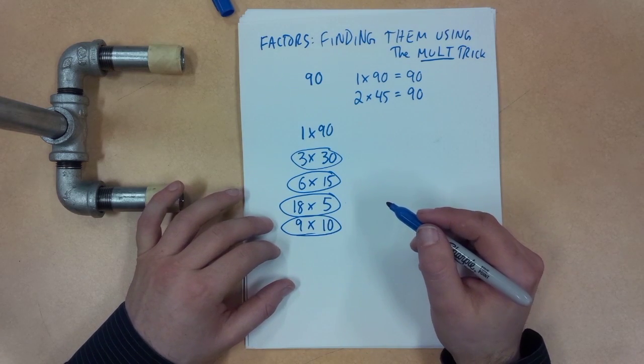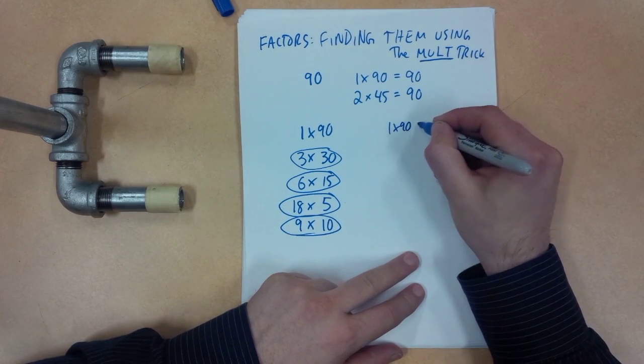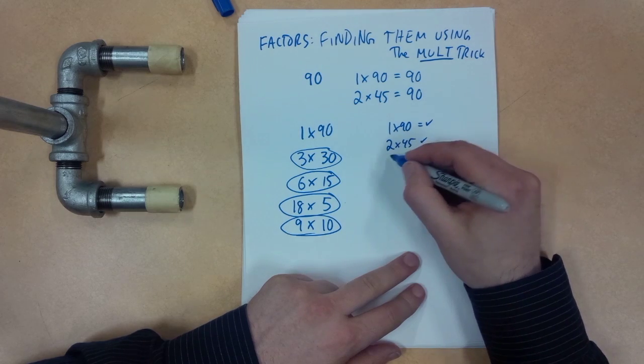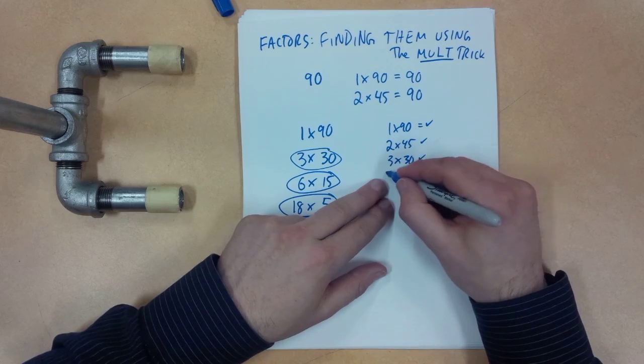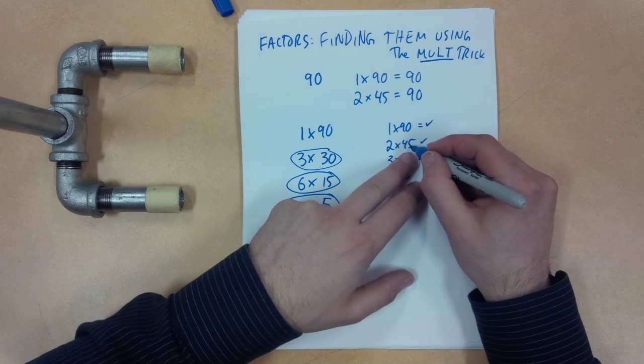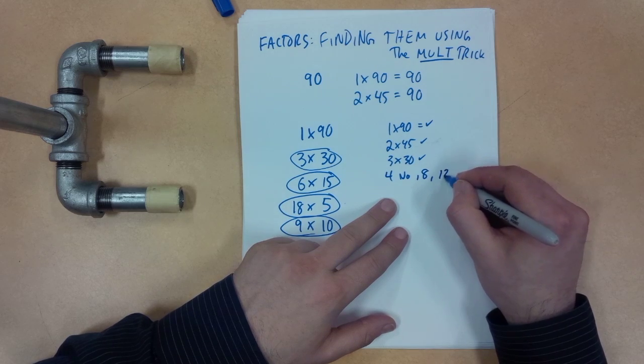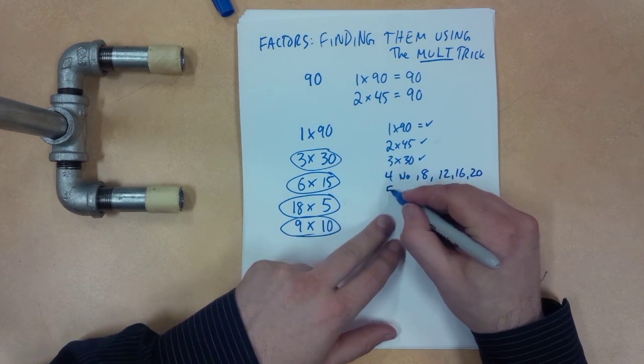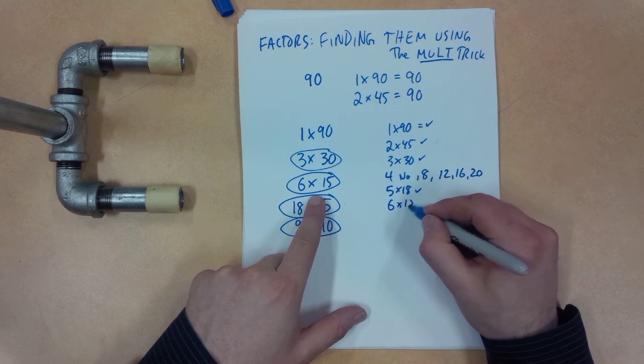So let's look at what we have so far. 1 times 90, yes, that's true. 2 times 45, that's true. 3 times 30, that's true. We know that 4 doesn't work because that would have to be able to cut in half. So 4 doesn't work. Neither does 8, or 12, or 16, or 20. We know that 5 times 18 works. No, we know that 6 times 15 works.